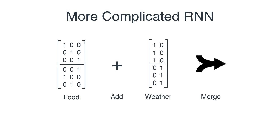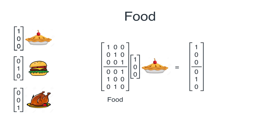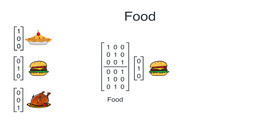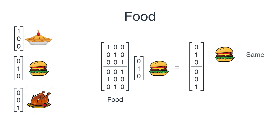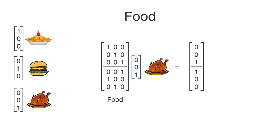Let's start with the food matrix. It's a three-by-six matrix — essentially a concatenation of two three-by-three matrices. If I multiply the matrix by the vector representing apple pie, I get a concatenation of two vectors: the top vector is the same input (since the top three rows form the identity matrix), and the bottom three rows give the food for the next day — the burger. If I multiply by the burger vector, I get the burger concatenated with the chicken; and by the chicken vector, I get the chicken concatenated with the apple pie.